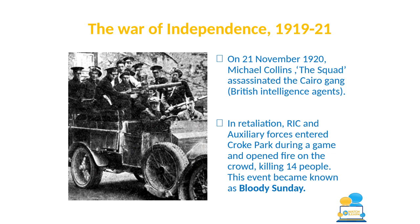One of the most significant events of the War of Independence was Bloody Sunday. On November 21st 1920, Michael Collins and the Squad assassinated a group of British intelligence agents known as the Cairo Gang. In retaliation, the RIC and Auxiliary forces entered Croke Park during a Dublin versus Tipperary Gaelic football match and opened fire on the crowd, killing 14 people. They blocked the gates to stop people from escaping — an indiscriminate massacre of civilians watching a football match.